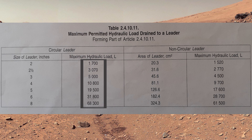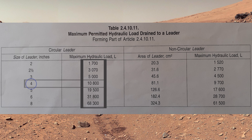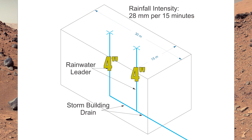So I go back into table 2.4.10.11 and go down to 10,800 liters, go across, and that is four inch. So both of those rainwater leaders need to be four inch.